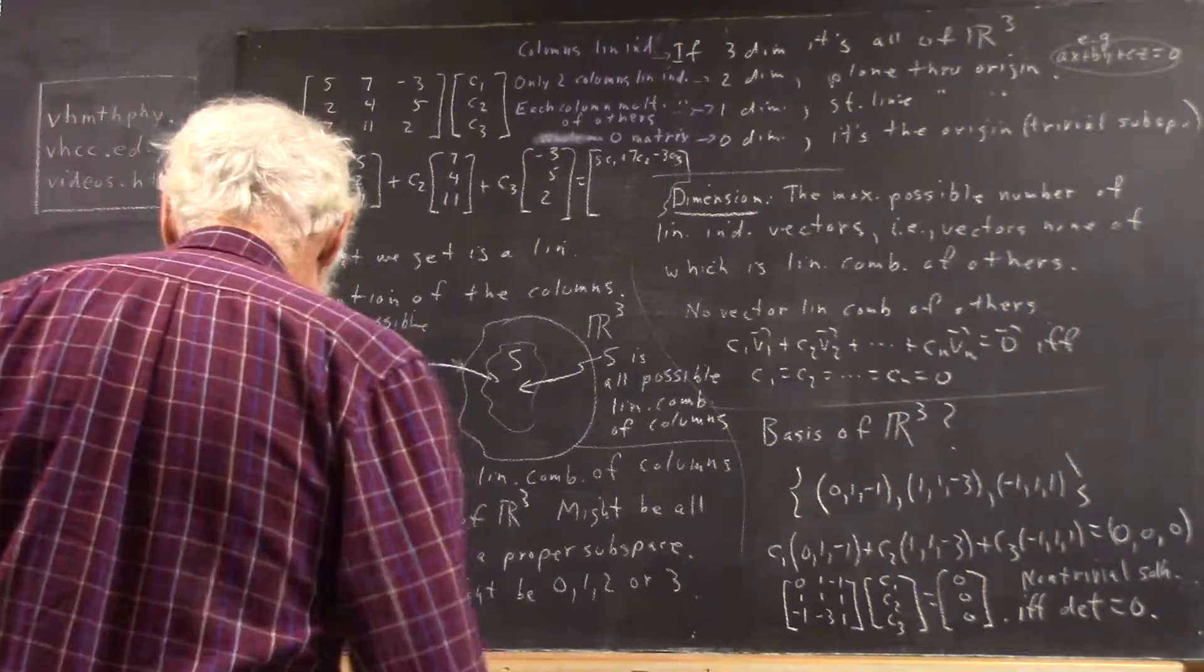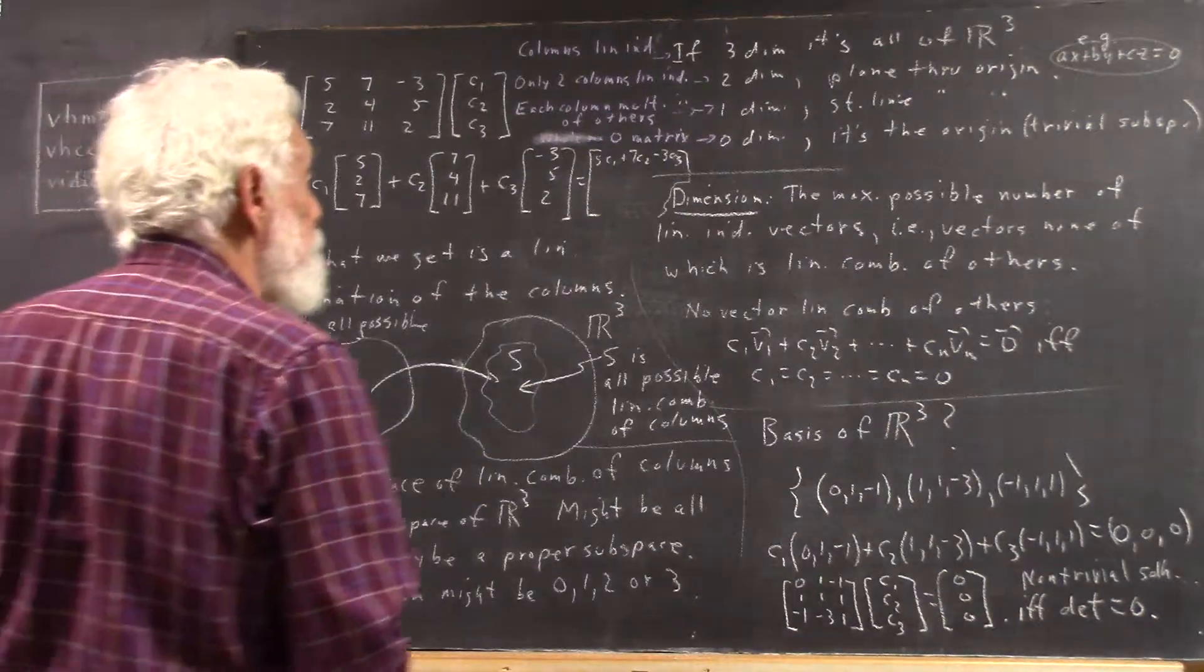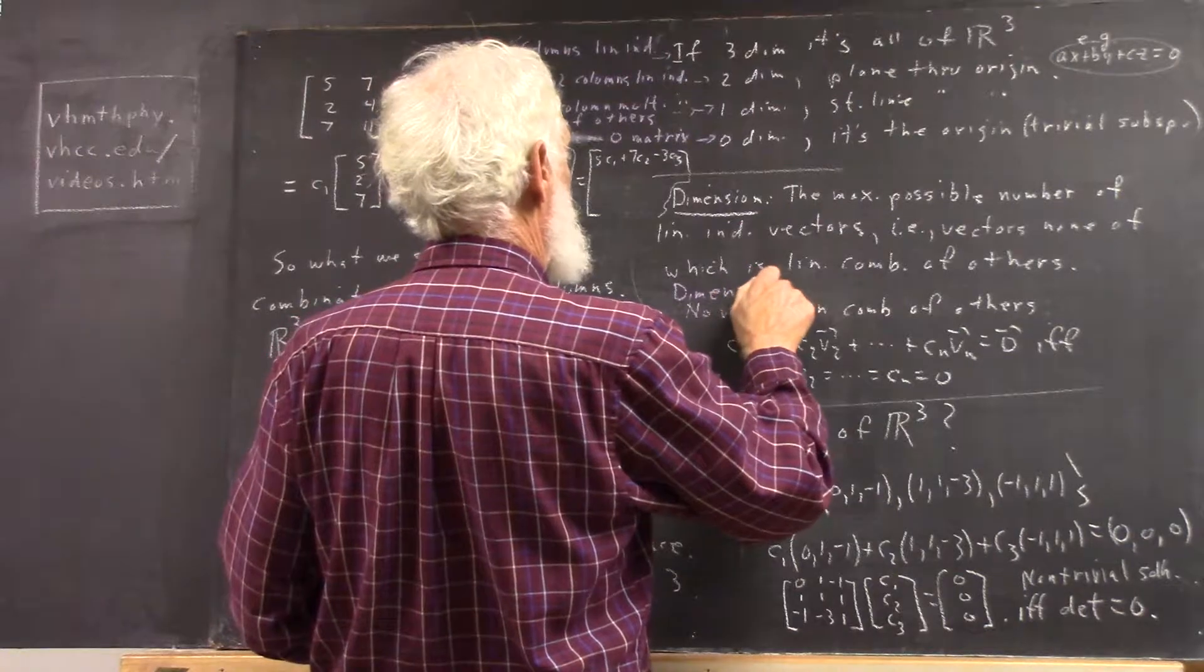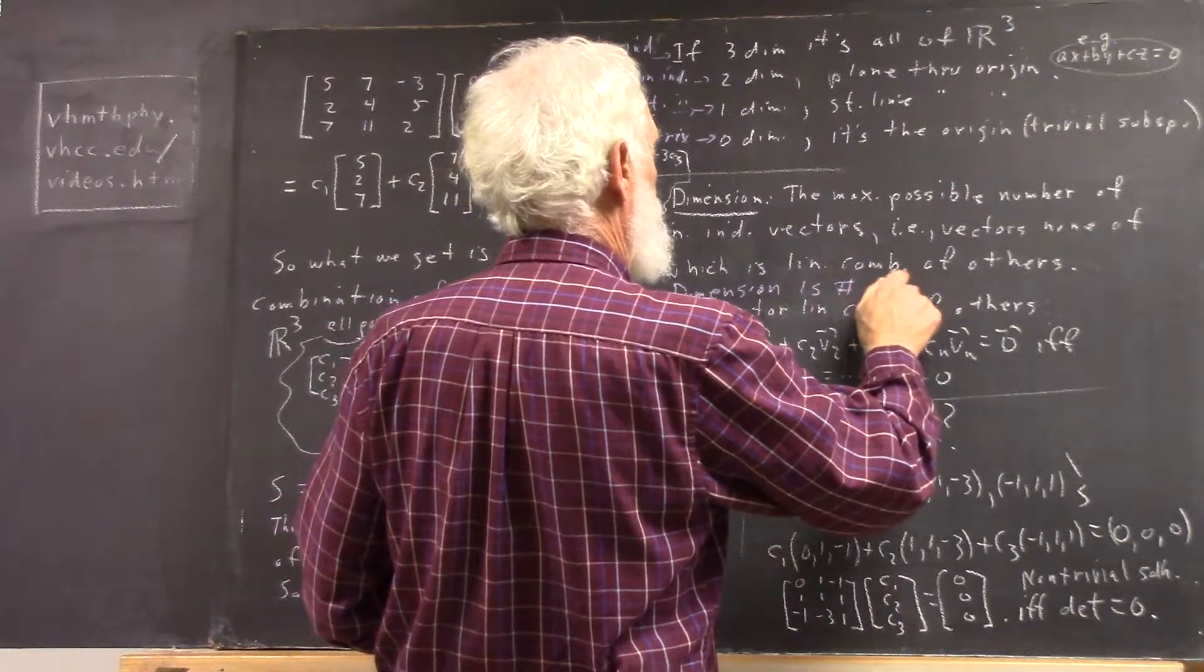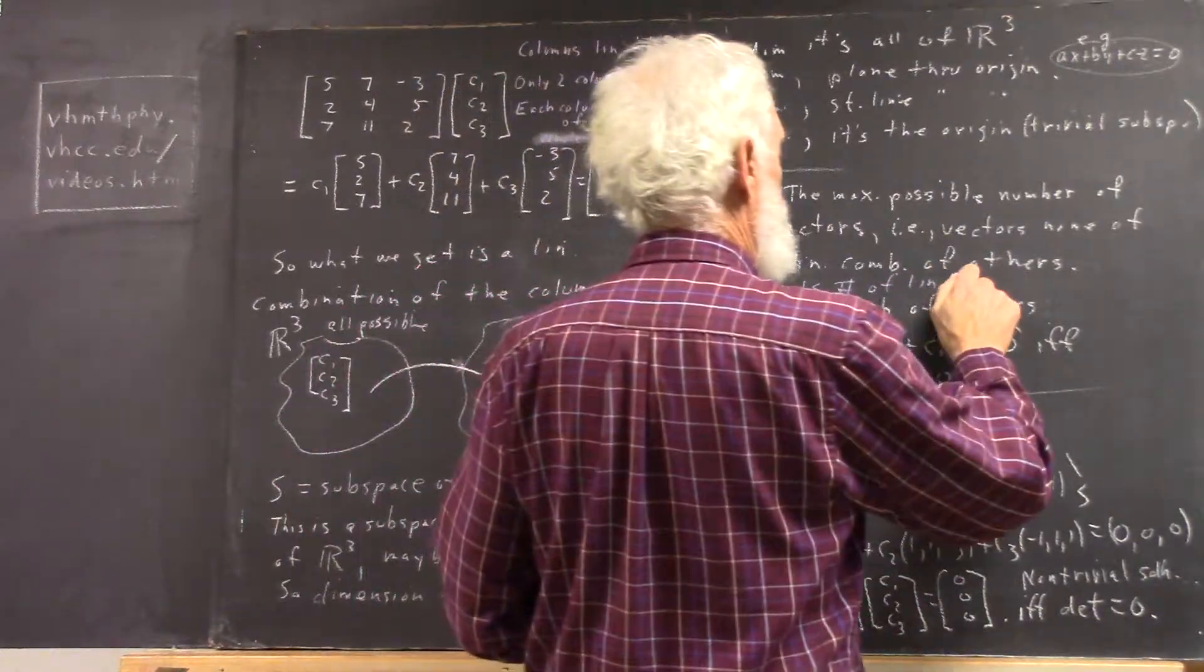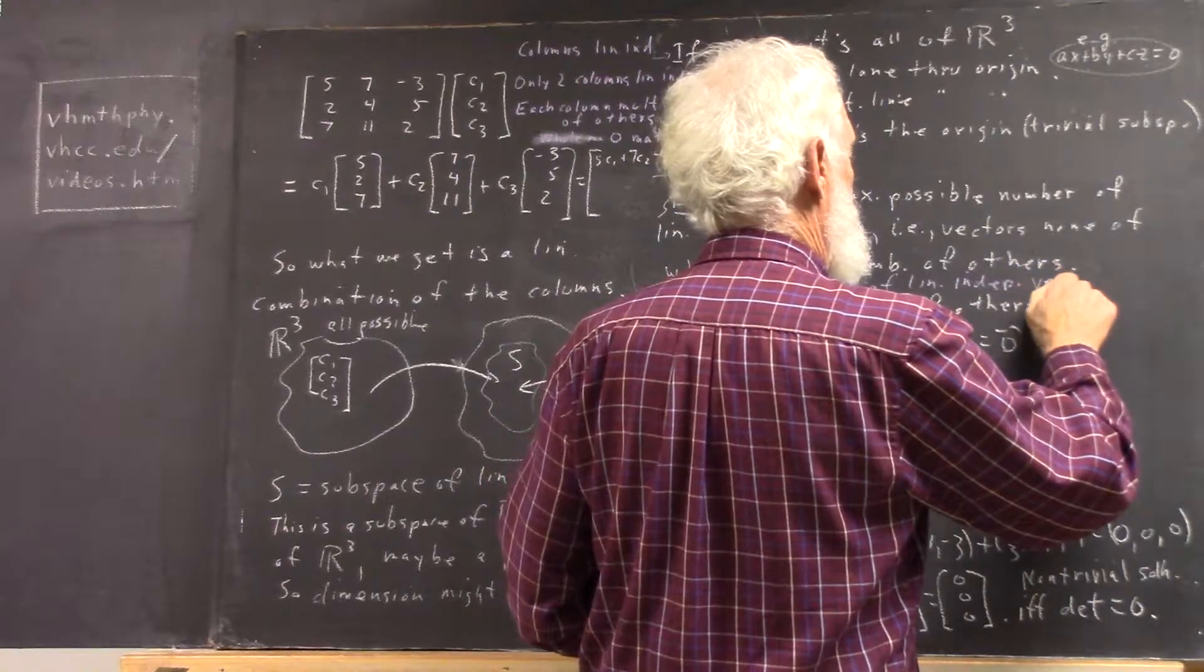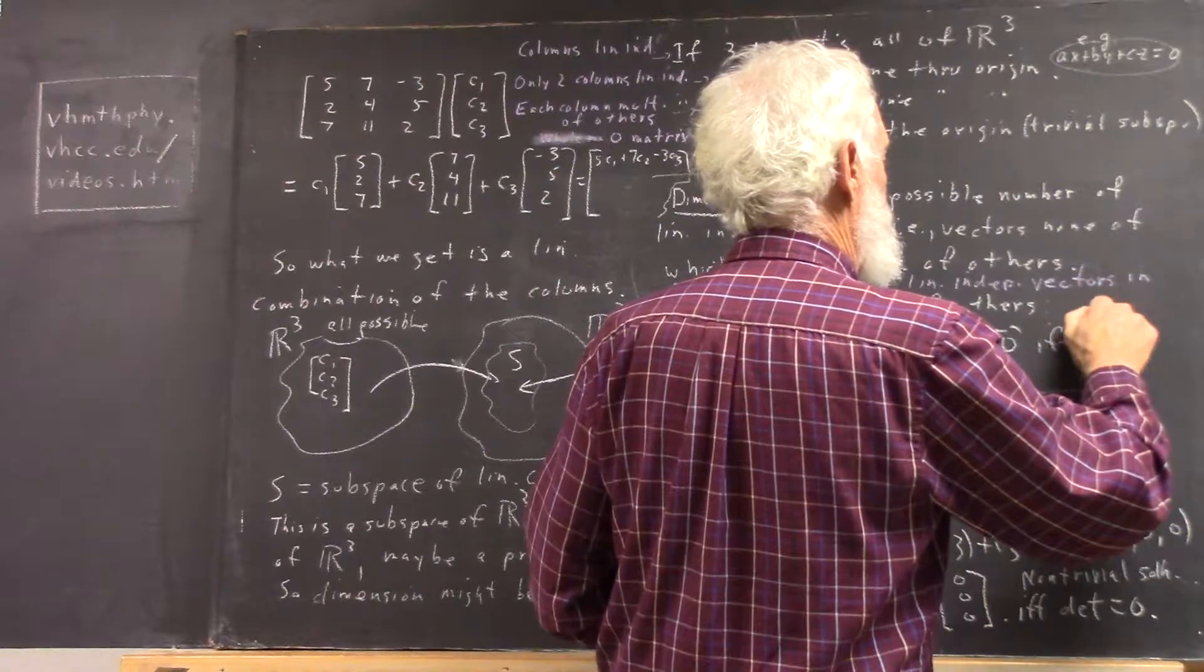So officially, dimension is a number of linearly independent vectors in a basis.